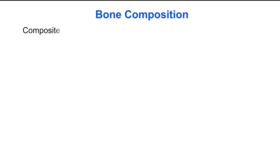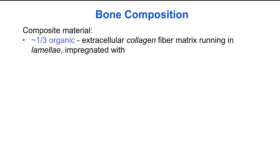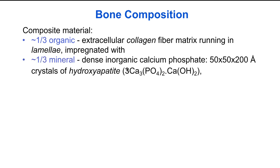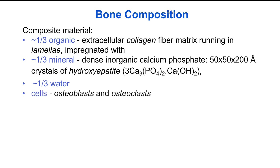Bone is a composite material. About a third of the volume is organic, consisting primarily of the extracellular collagen fiber matrix running in the lamellae, which is impregnated with about another third by volume of dense inorganic calcium phosphate crystals known as hydroxyapatite. The remaining third is water. The cells in bone are called osteoblasts, which generate new bone, and osteoclasts, which degrade it.